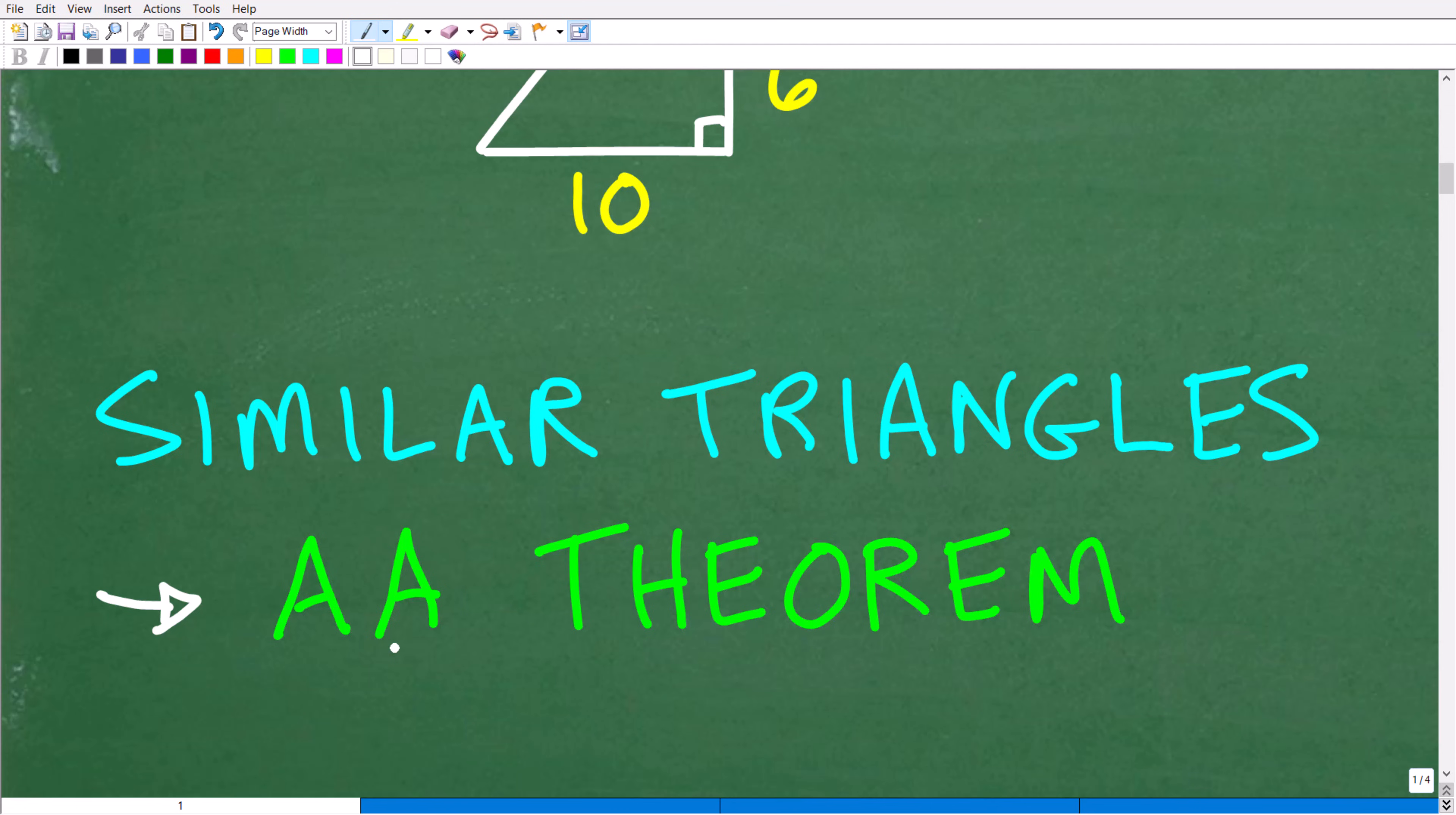AA stands for angle-angle theorem. Now, when you study geometry, especially at the high school level, you learn a ton of theorems and postulates. And if you were ever wondering, or if you remember postulates and theorems, and you've heard the word before. So what's the difference between a postulate and a theorem?